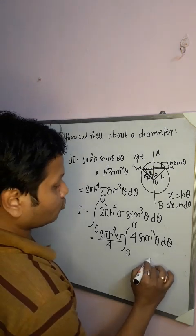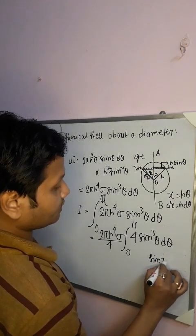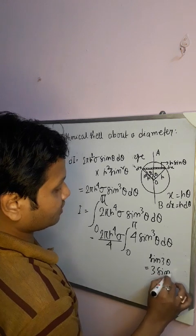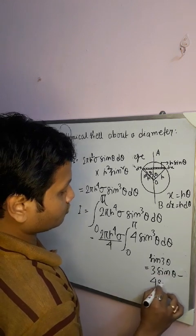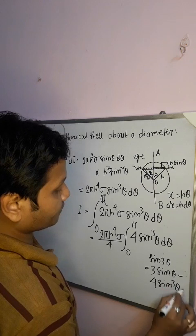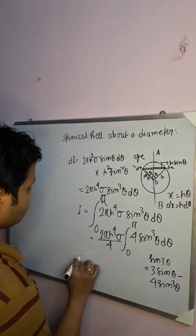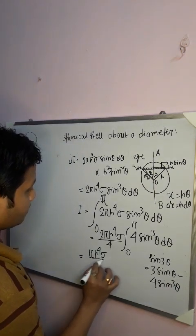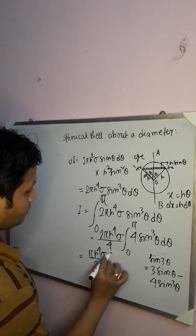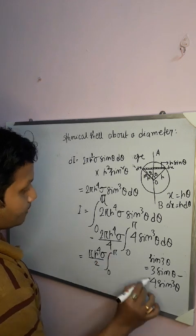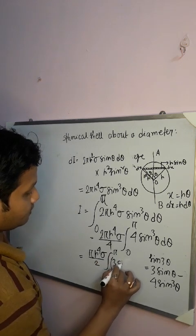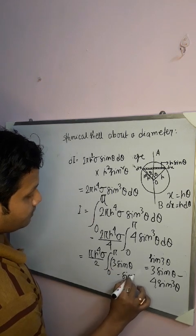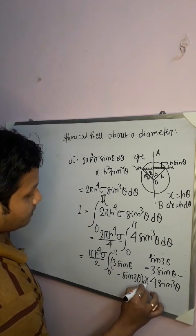We use the identity sin3θ = 3 sinθ − 4 sin³θ, from which sin³θ = (3 sinθ − sin3θ)/4. Substituting, I = (πR⁴σ/2) ∫₀^π (3 sinθ − sin3θ) dθ.